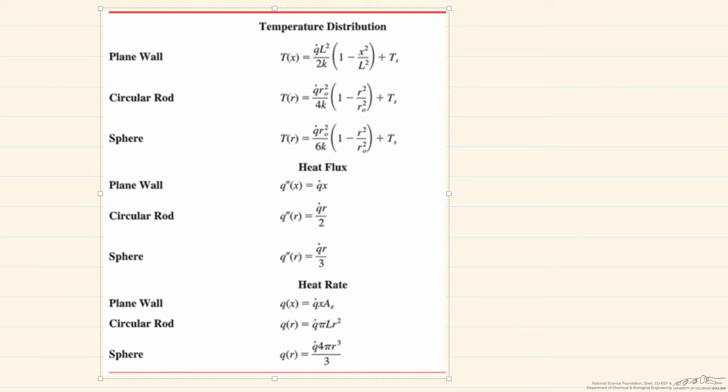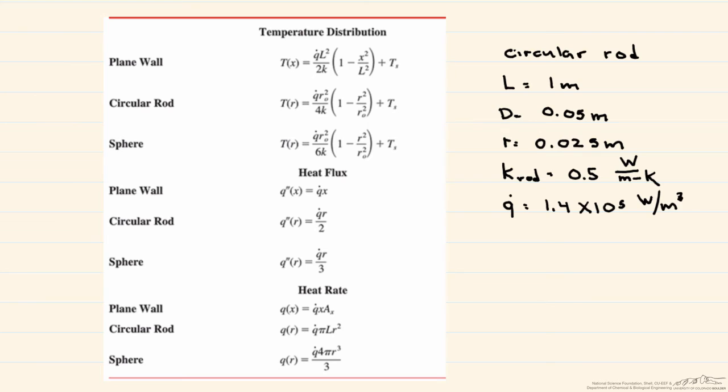So let's go back to our original problem, where we have a rod that is generating at 1.4 times 10 to the fifth watts per meter cubed. So I've written here the necessary numbers that we need in order to solve for a centerline temperature of the generating rod. And why are we interested in the centerline temperature? Because that's where the maximum temperature is going to be.